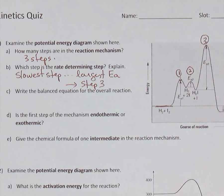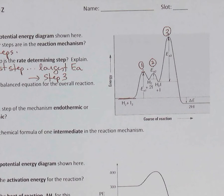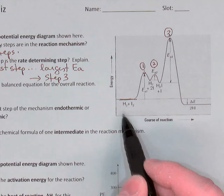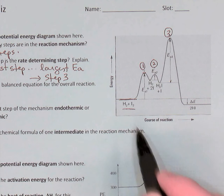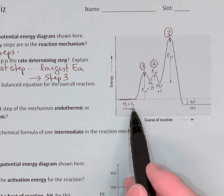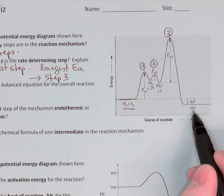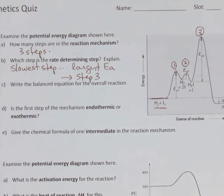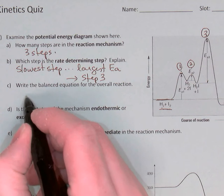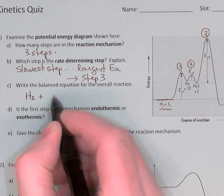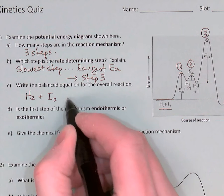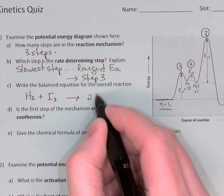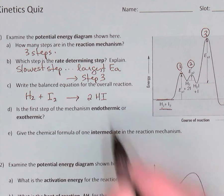The balanced equation for the overall reaction: the diagram shows the initial reactants are hydrogen and iodine, H₂ and I₂, and the final products are two HIs. That's all I need to write the overall reaction: H₂ and I₂ become two HI. There's the overall reaction.